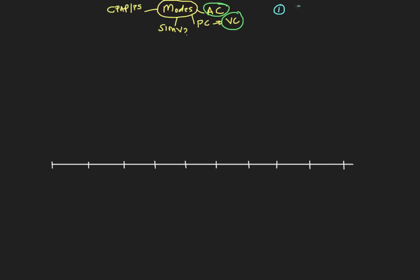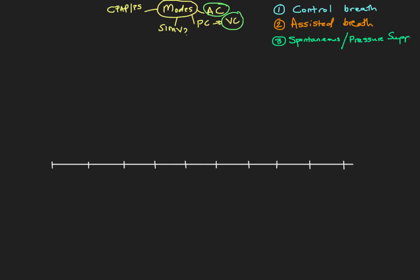The first type is called a control breath. The second type is an assisted breath. And the third type — which we won't get to in this video but I'll cover in the next — is either called a spontaneous breath or sometimes called a pressure supported breath, or sometimes just a supported breath. So those are our three main types: a controlled breath, an assisted breath, and a spontaneous or pressure supported breath.